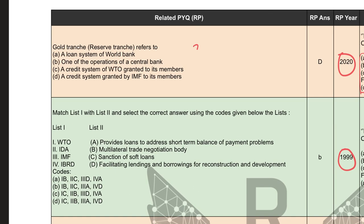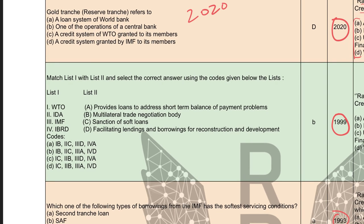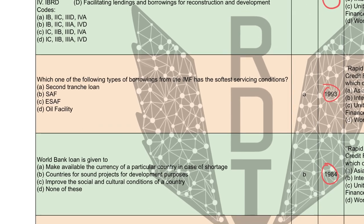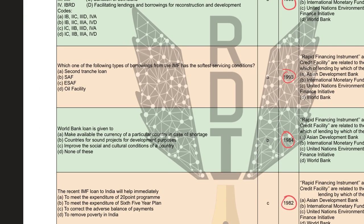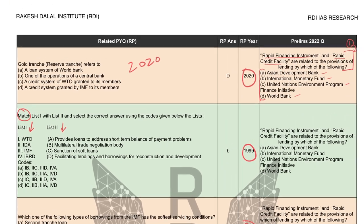Comparing the 2022 question with earlier ones: in 2020 we again had a one-statement question. In 1999 it was a derivative — a matching type where items from list one are matched to list two. In 1993 and 1982 as well, it was a one-statement format. Every time a question on lending by a big international financial institution has appeared, it has been a one-statement question. Let us now see if these PYQs help answer the 2022 question.